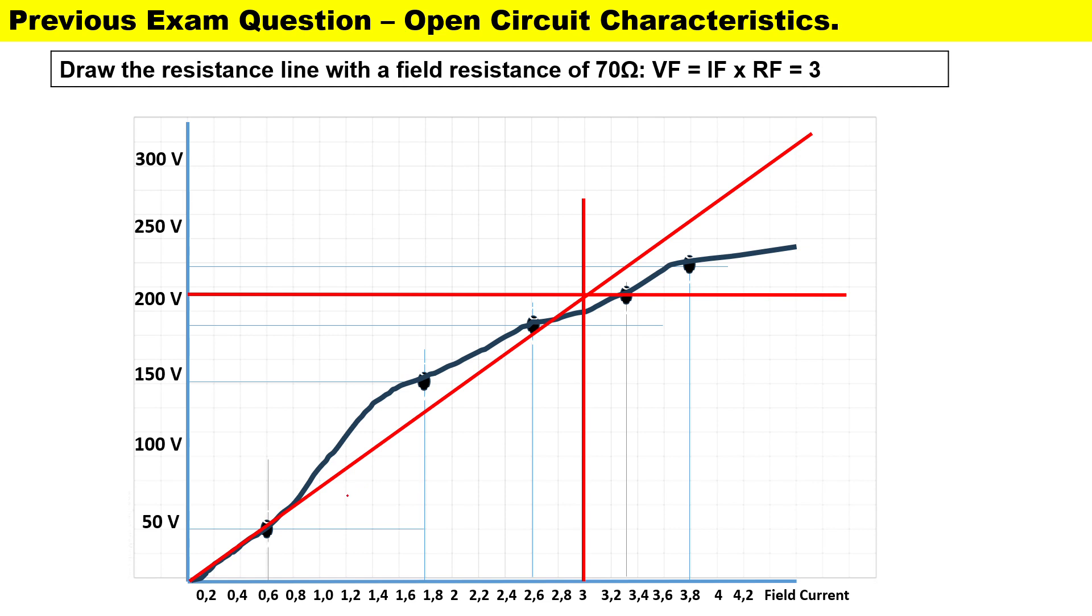Where the resistance line touches the open circuit characteristic line, that will give us our terminal voltage which is also known as the no load voltage of 200 volts. This is where the resistance line intercepts with the OCC curve.